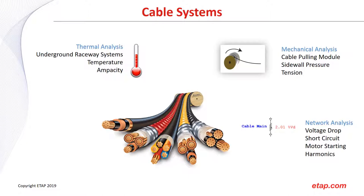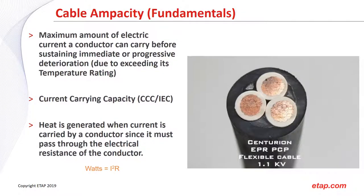Now let's cover the fundamentals. Cable ampacity is essentially the maximum amount of electrical current a conductor can carry before sustaining immediate or progressive breakdown, due to exceeding its temperature rating. Whenever you order or purchase a cable, there is a TC rating — a maximum allowed temperature — specifying how much current that cable can carry. We'll go over some sample data sheets later so we can see where that information is found.